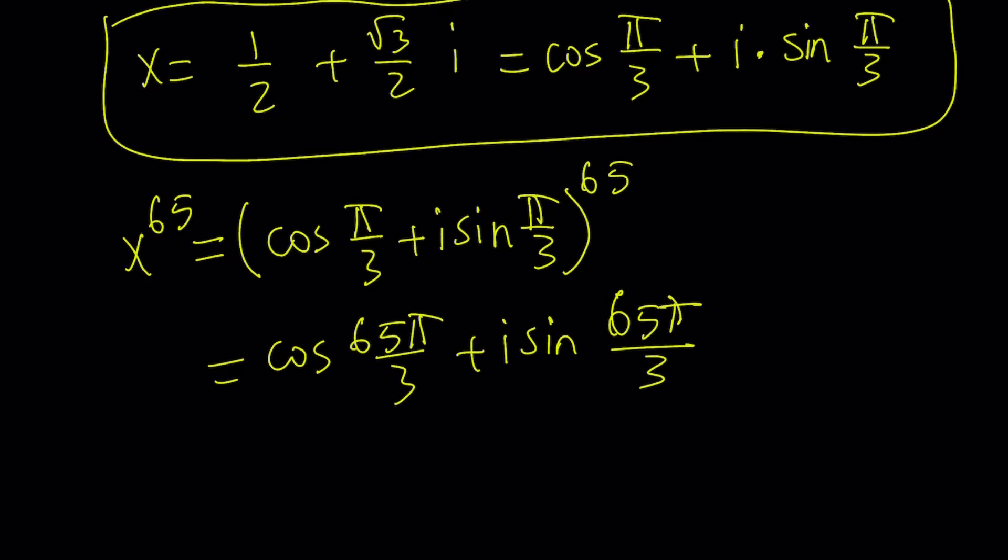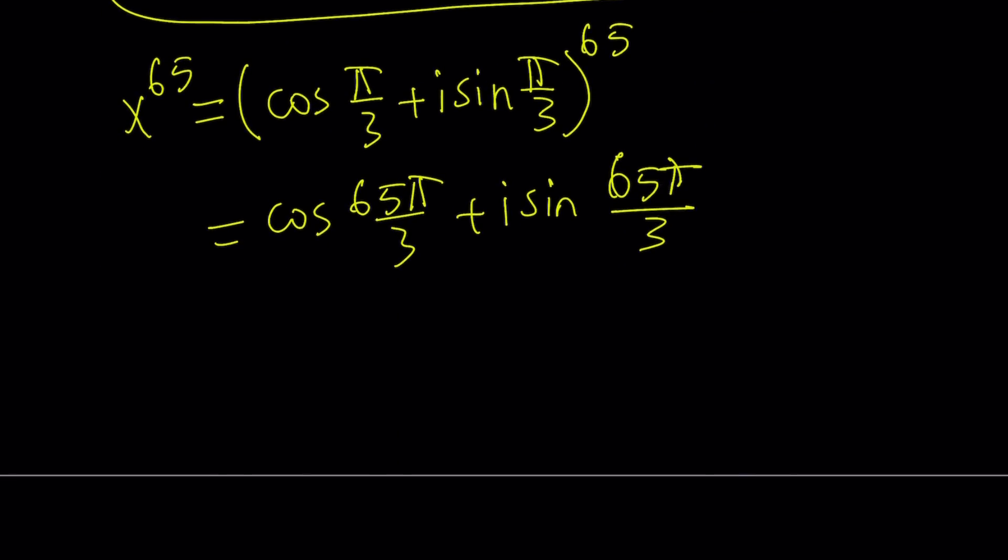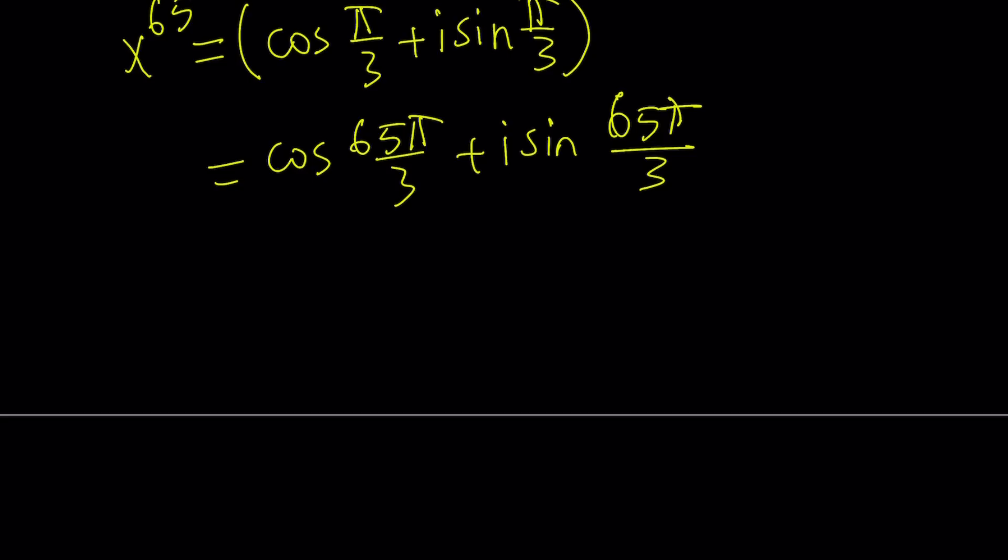That's a huge economy there. So what is 65 pi over 3? That's way too large, like 20 something pi. Let's take out multiples of 2 pi and you can easily do the following. 65 pi over 3 is 60 pi plus 5 pi over 3. And this part is just going to be 20 pi, which is 2 times, well, 10 times 2 pi. I don't care about it. So this can be written as 5 pi over 3. They're not equal, but they're equivalent anyways.